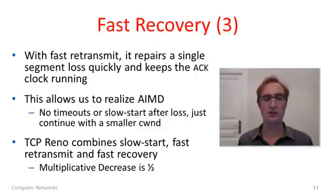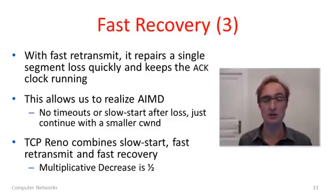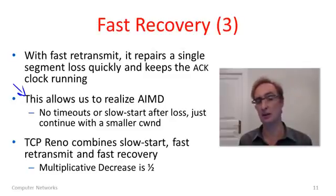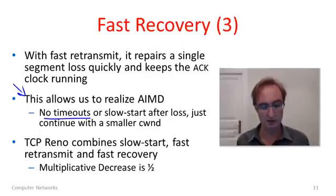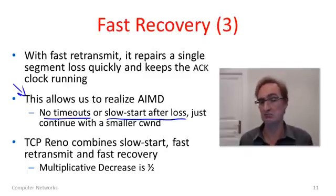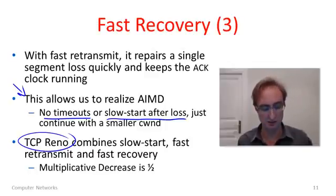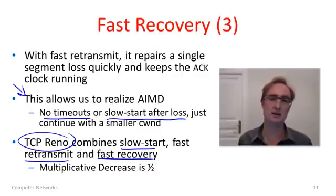In conjunction with fast retransmit, fast recovery allows us to repair a single segment loss quickly: retransmit the lost packet and continue sending while waiting for the ACK. When you put all these pieces together they allow us to realize additive increase multiplicative decrease — adjusting the congestion window up and down, not using timeouts, and not using slow start after loss for single packet losses. These mechanisms are implemented in TCP Reno, the historic version from 1990, which combined slow start, fast retransmit, fast recovery, and better timeout estimators.